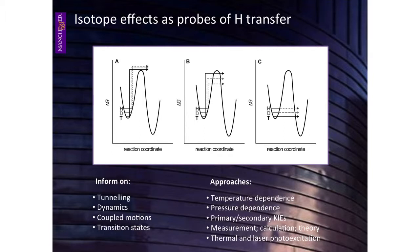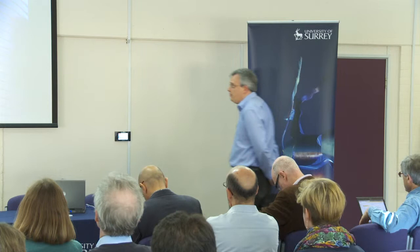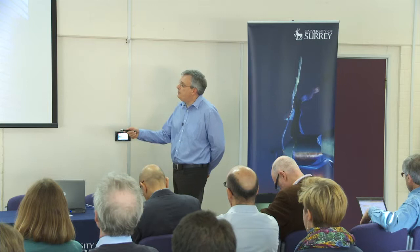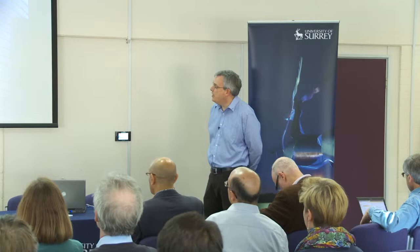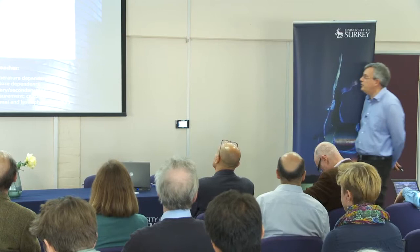Isotope effects can give information on coupled motions — that's the coupling of neighboring atoms in the hydrogen transfer process — and in a more classical sense, they can give information on the structure of transition states. The experimental approaches we've been using are to study the temperature dependence of isotope effects, which is the gold standard for showing that quantum tunneling is part of the reaction. We've also been developing pressure dependence work, looking at primary and secondary kinetic isotope effects, mixing experimental measurements with insight from calculation theory through collaborations with more theoretically inclined groups.